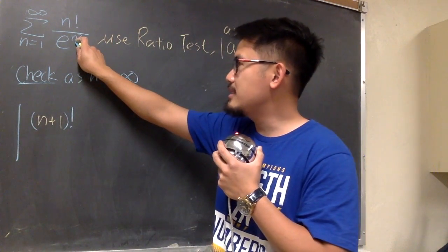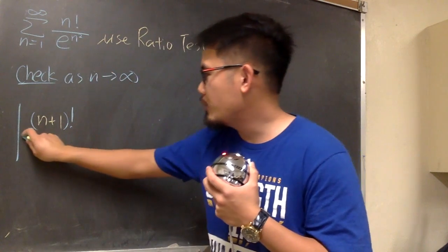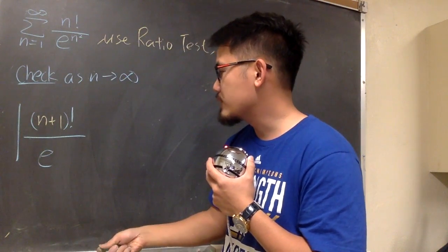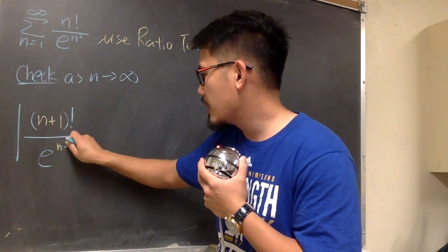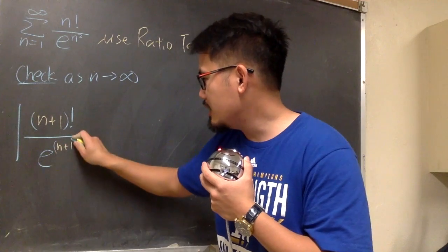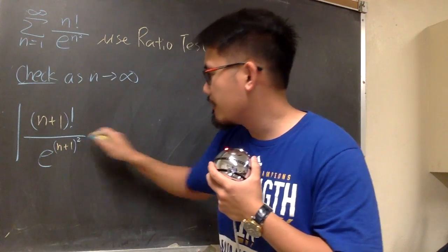On the bottom, we replace this n with n+1. So, we will have e, and then this is the n+1 now, right? And then we are just going to put parenthesis around this, and then square that, like that.